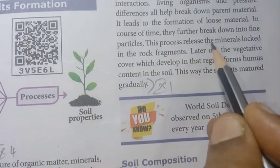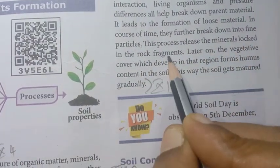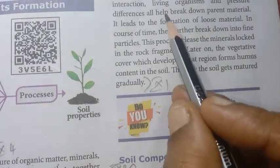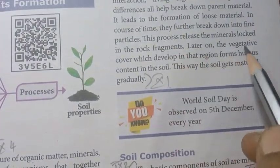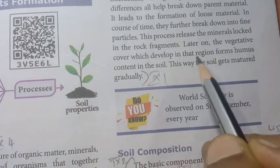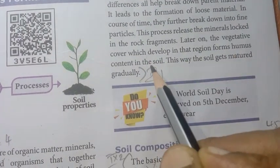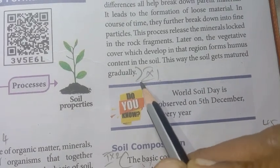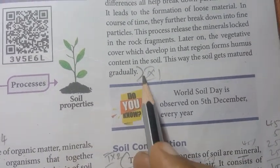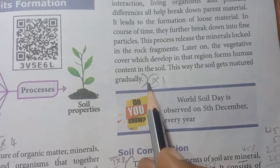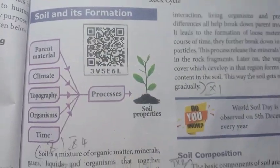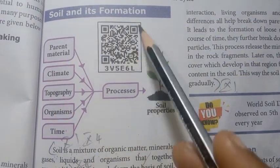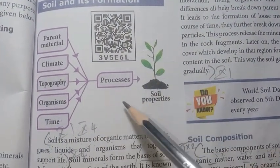This process releases the minerals locked in the rock fragments. Later, the vegetative cover which develops in that region forms the humus content in the soil. This way the soil gets matured gradually.